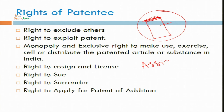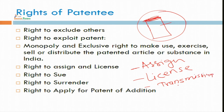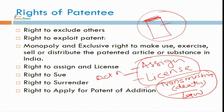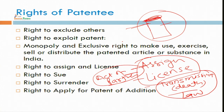You can assign the patent to another person, you can give a license of that, or another option is transmission. Transmission is in the case of death — it may be done by operation of law. In assignment or license, this is done by the act of the parties. For example, Pfizer gave a license to Coca-Cola and earns 2.5 million per day. Similarly, Sabir Bhatia assigned hotmail.com to Microsoft. There is a difference between a license (as in Coca-Cola's ring pull can) and an assignment (as with Sabir Bhatia's hotmail).